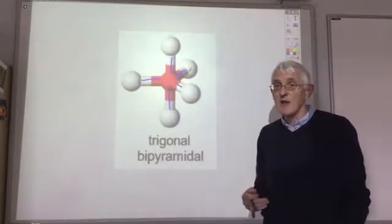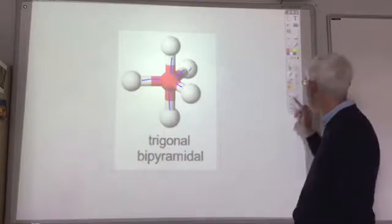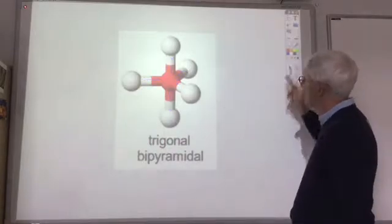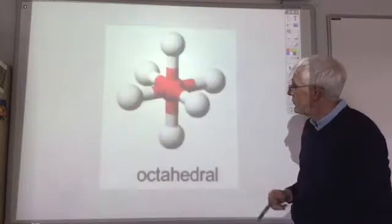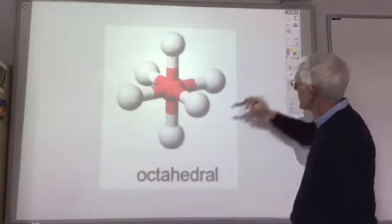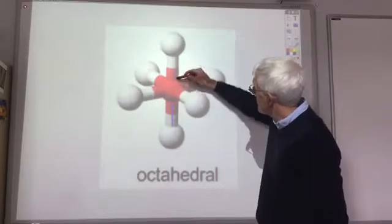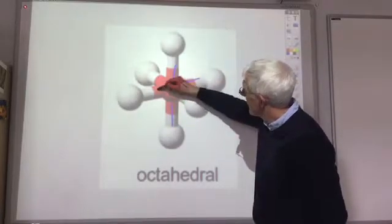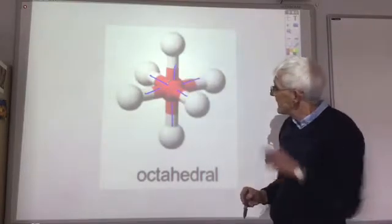And finally, the last one we'll look at will be, if we've got six electron pairs, which rather confusingly is known as an octahedral shape. So one, two, three, four, five, six different electron pairs.